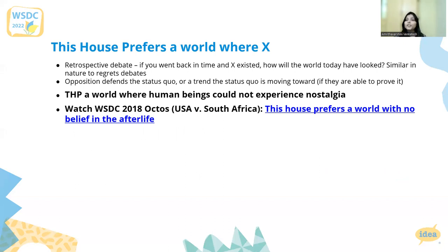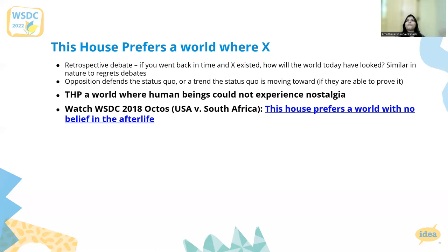As an example: the World Universities 2022 EFL Grand Final — 'this house prefers a world where human beings cannot experience nostalgia.' Here, proposition has to defend nostalgia the way we experience it now and what the world would have looked like if this nostalgia didn't exist. In contrast, opposition has to defend nostalgia the way we experience it now, rather than an ideal nostalgic feeling they would want to defend even though that is not realistic in the world.